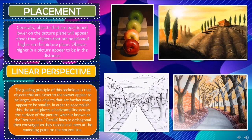Linear perspective: the guiding principle of this technique is that objects closer to the viewer appear larger, while objects further away appear smaller. The artist places a horizontal line across the surface, known as the horizon line. Parallel lines or orthogonals then converge as they recede and meet at the vanishing point on the horizon line.